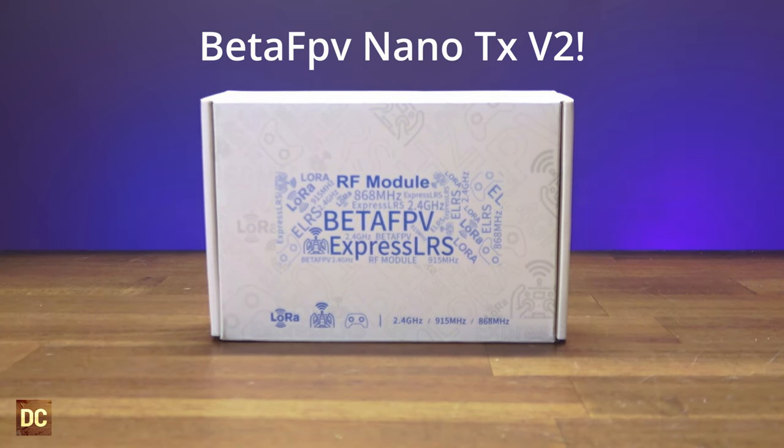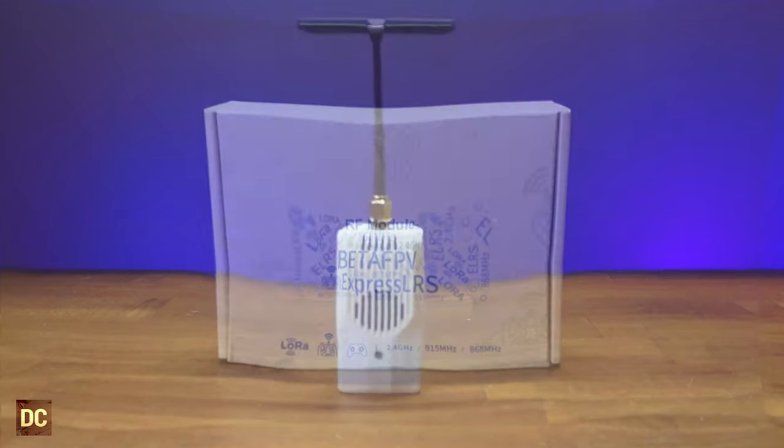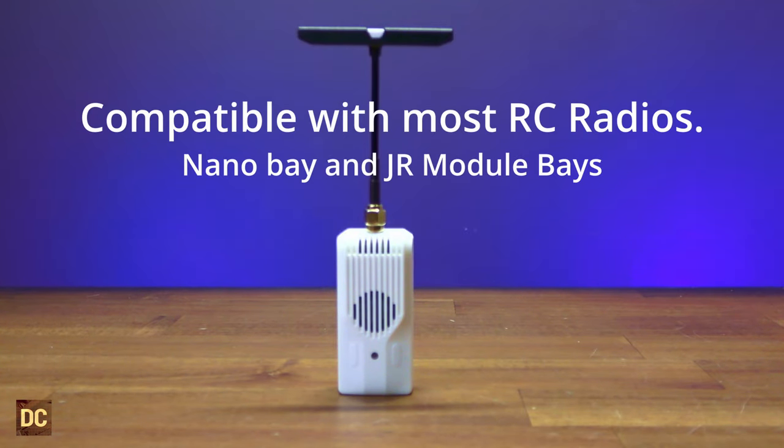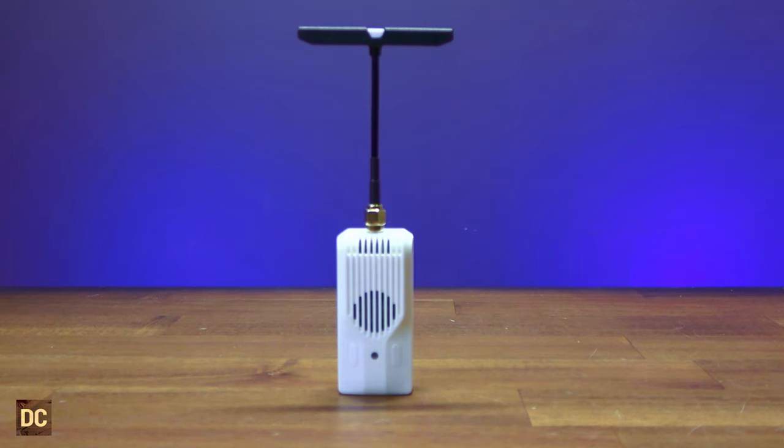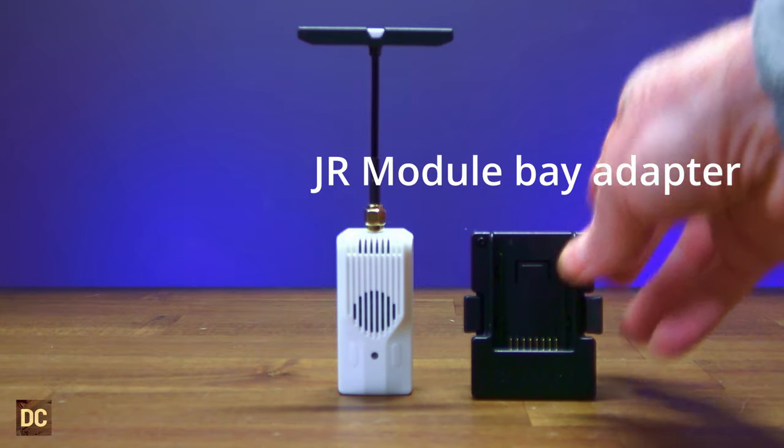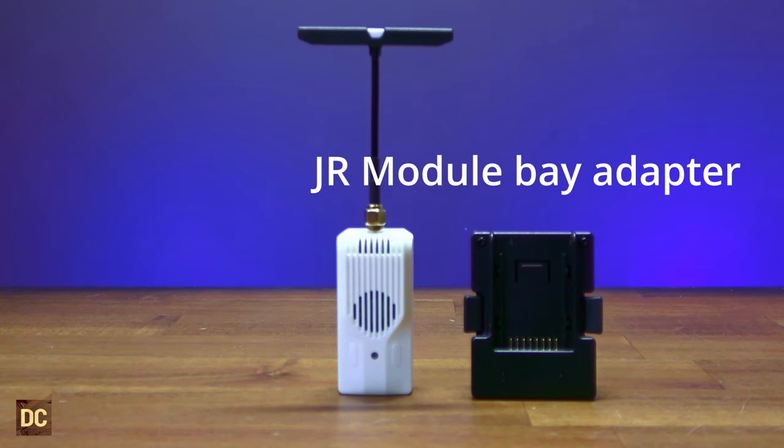Inside this box is the brand new BetaFPV Nano TX version 2. This is the brand new module. It is compatible with all types of micro bay transmitters out there, including RadioMaster, Jumper TXs, as well as even the FR Sky transmitters. Now this comes in a micro nano scale, which is also compatible with JR module bays if you get the adapter. So it will also work with TX16S and Boxer radios.